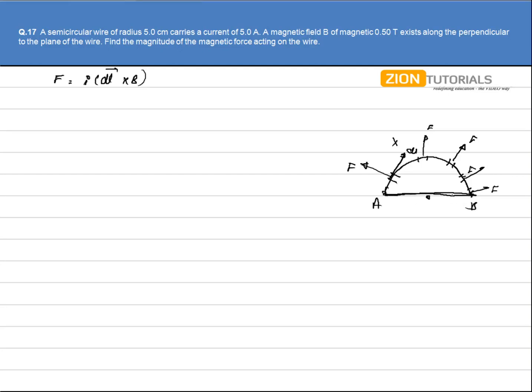And take a straight wire AB of length 2r. And the force that will be acting on this 2r will be the same as the force acting on the wire of semicircular shape.